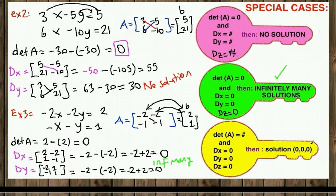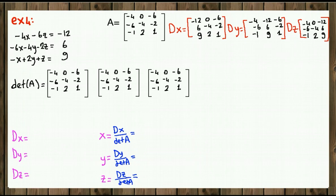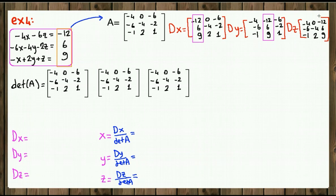Now let's work on a more complicated 3x3 example. We're given a system and our first step is to convert it into augmented matrix A, taking the coefficients of x, y, and z. Column B is highlighted. We write DX, DY, and DZ by switching the x column with B column, the y column with B column, and the z column with B column respectively.